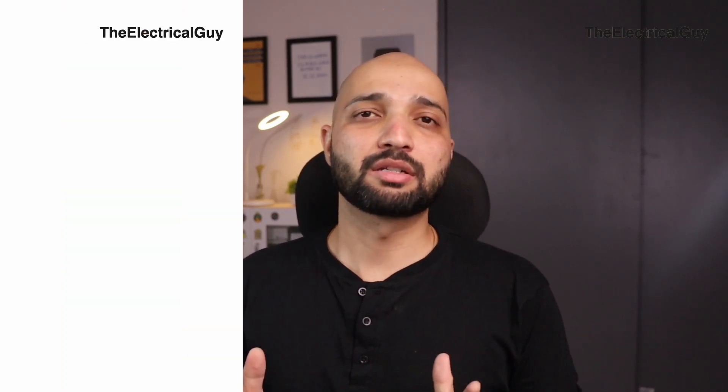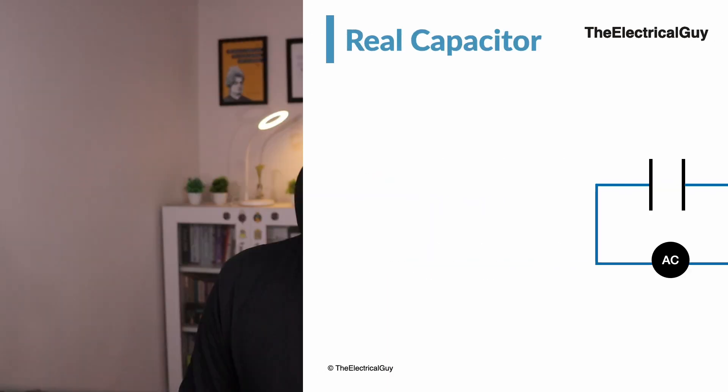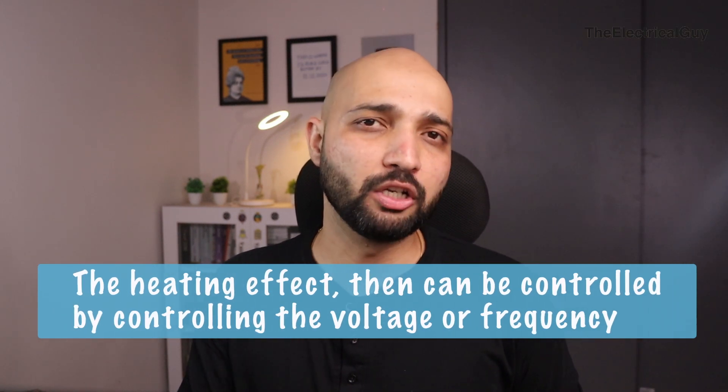This heating effect can become so extreme that in some cases it is used for melting plastic. The plastic is put inside the two conducting plates of a capacitor, which is connected to an AC source.